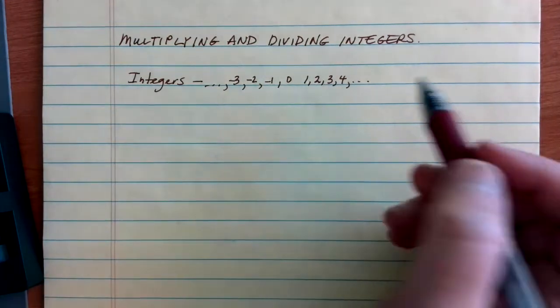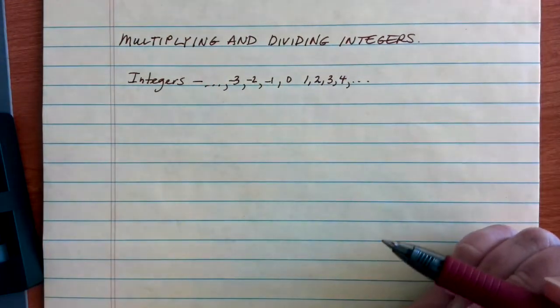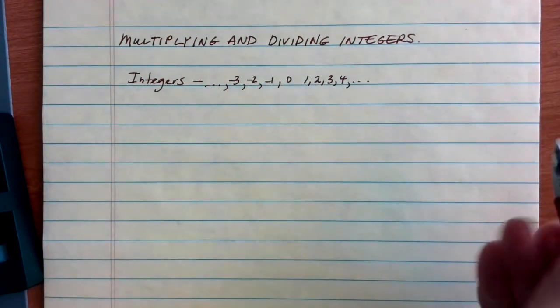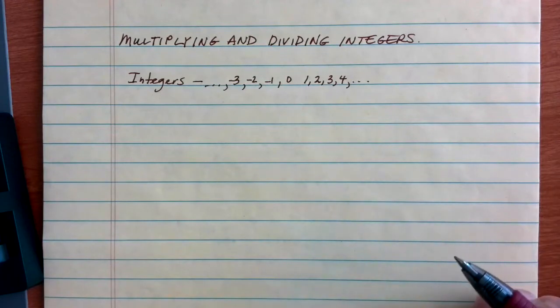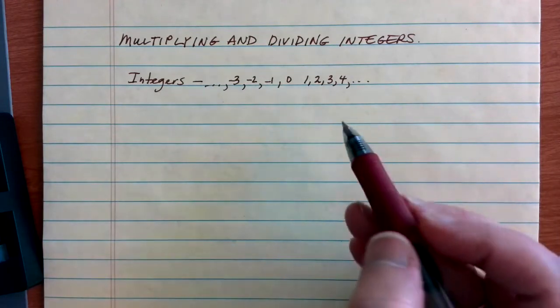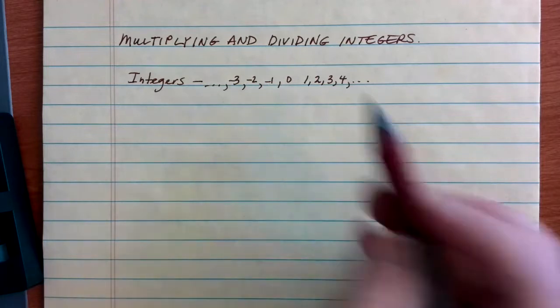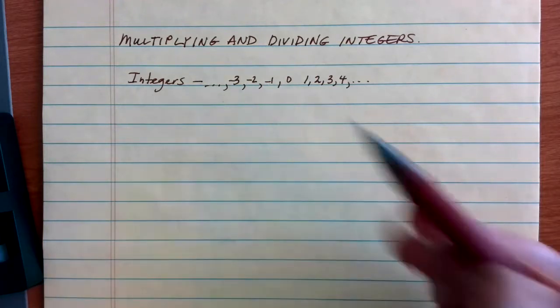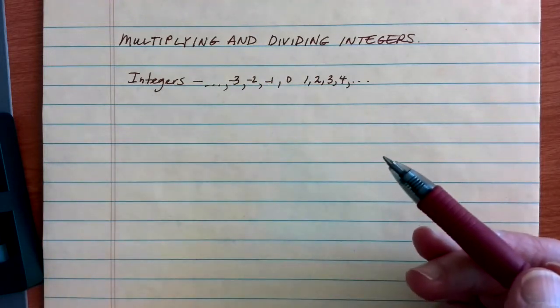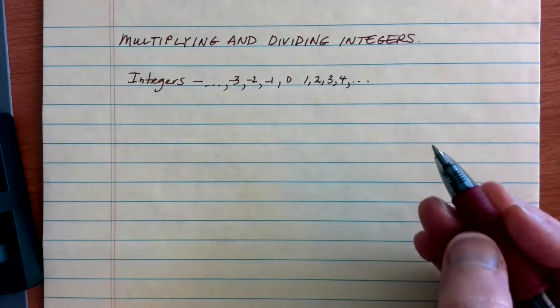All of the rules that we're going to be learning here for multiplying and dividing integers can also be used for multiplying and dividing any positive and negative numbers. We're just going to be using some nice and easy numbers to start out with, but the rules will stay the same regardless.